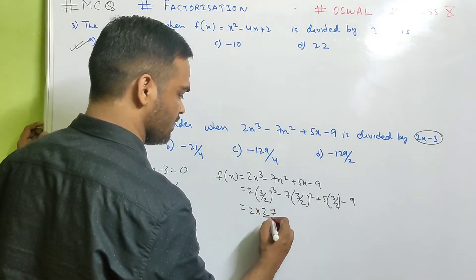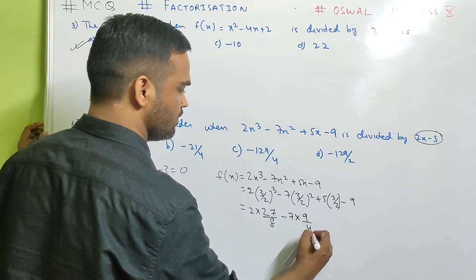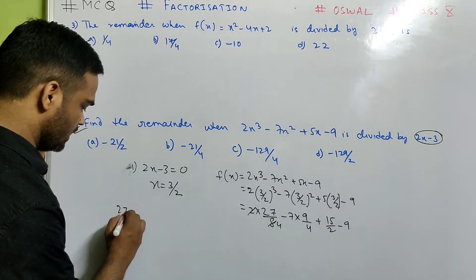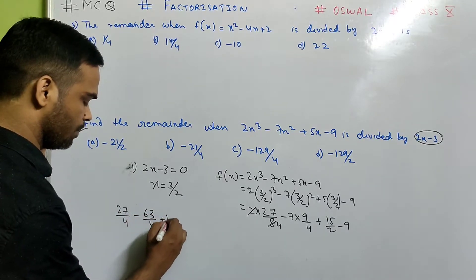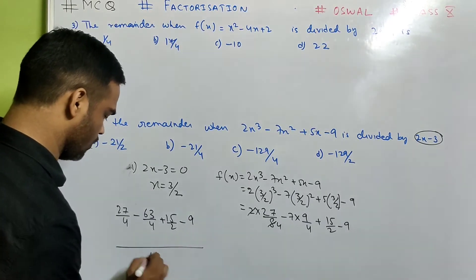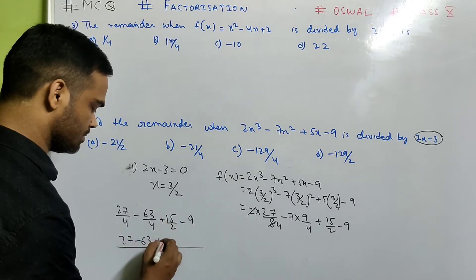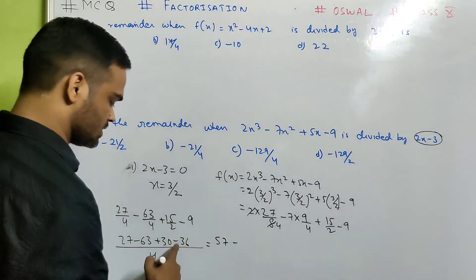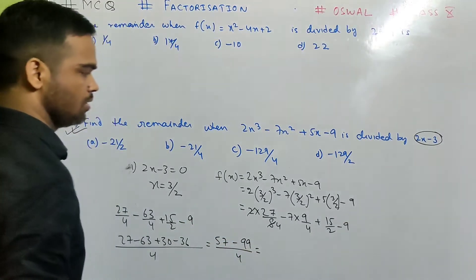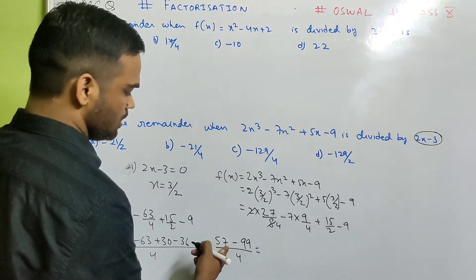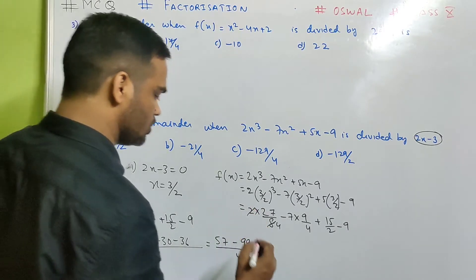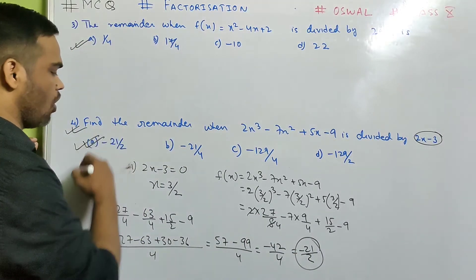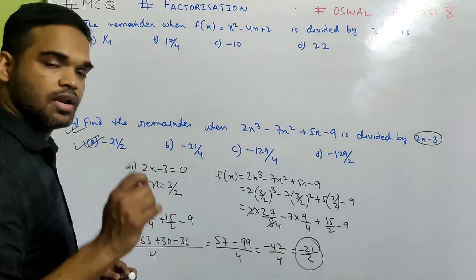Open the bracket. This is 3 cube is 27, 2 cube is 8 minus 7, 3 square is 9, 4, 5, 3 is of 15 by 2 minus 9. Am I correct? So that becomes 27 by 4 minus 63 by 4 plus 15 by 2 minus 9. Take LCM will be 4. So 27 minus 63 plus 2 times that's 30 minus 9, 4 is of 36. That becomes 30 plus 27 is 57 minus 99 by 4. How much is this? This is if you subtract then 99 minus 57 is 42. You need to be minus 42 by 4. That's minus 21 by 2. Done. So your first option is correct over here.